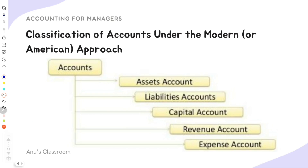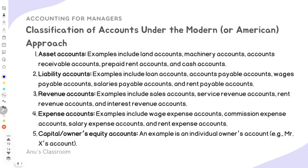Under the modern or American approach, asset accounts include land, machinery, accounts receivable, prepaid rent, and cash. If you're unsure what an asset, liability, or capital is, I'll leave a link to a detailed video on that. Liability accounts could be loan accounts, accounts payable, wages payable, salary payable, rent payable — things we have not yet paid, and therefore they become a liability to us. Revenue accounts could be sales, service revenue, rent revenue, or interest revenue. For example, if you own a building and rent it out, the income is recorded in a rent revenue account.